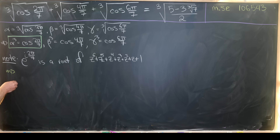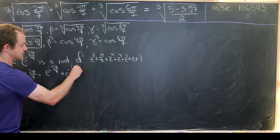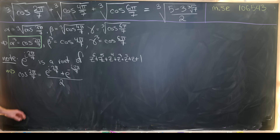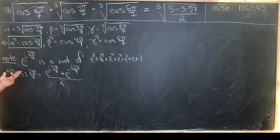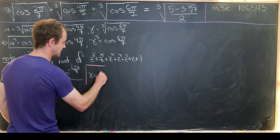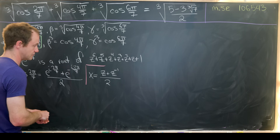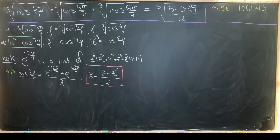We can write cos(2π/7) as (e^(i2π/7) + e^(−i2π/7)) / 2 using Euler's formula. If we set z = e^(i2π/7), then z⁻¹ = e^(−i2π/7), which motivates the substitution x = (z + z⁻¹) / 2, since z is a root of the degree-6 polynomial.